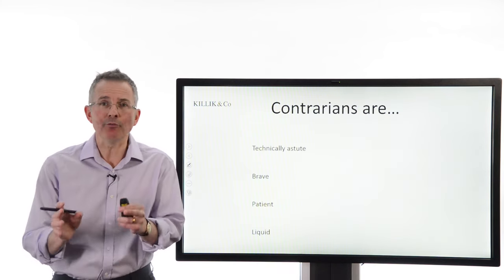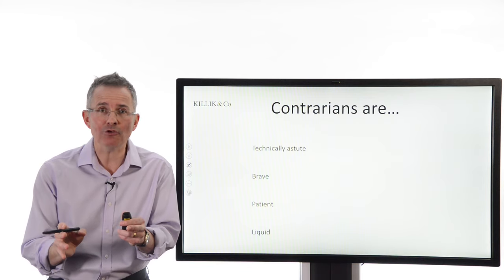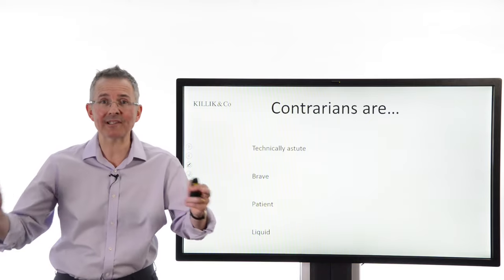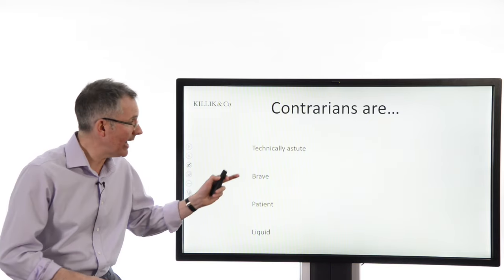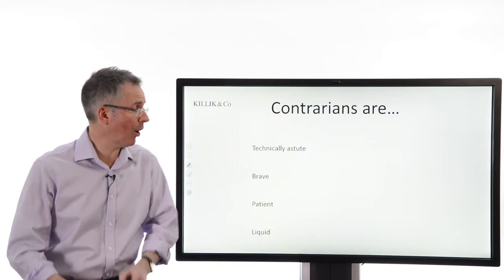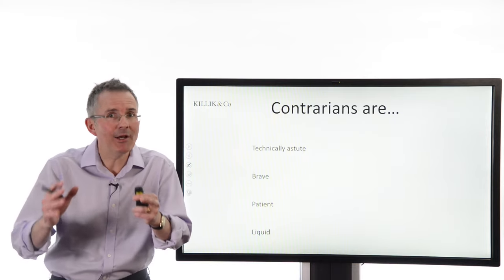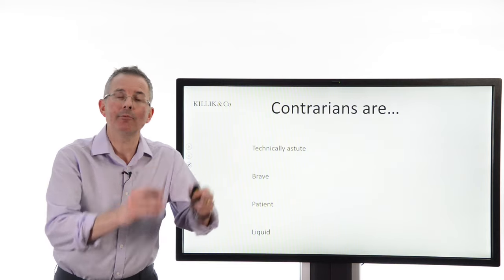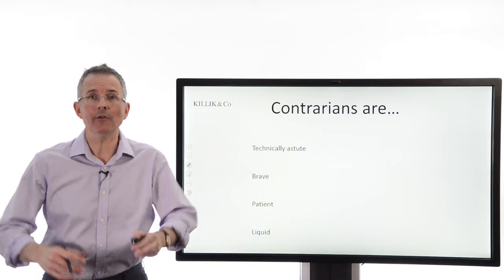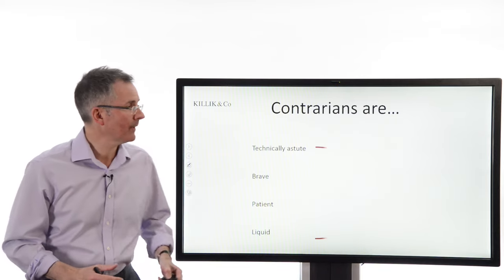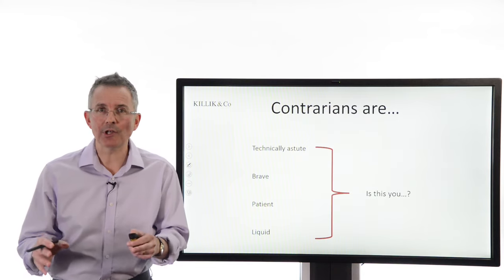So why aren't more people successful contrarians? Well, the problem is you've probably worked out already that to be a contrarian, to make this work for you, you've got to be technically astute. You've got to understand what I've just said, basically. Brave enough to go in when other people are not, or sell when other people are not. Patient, because it may not pay off the strategy straight away. You may sell and then have to wait to be proved right. And liquid. You've got to be able to hold your position and wait for it to come good.